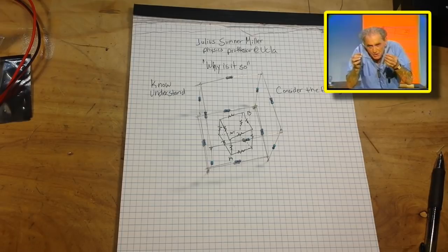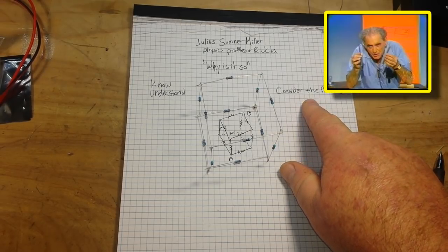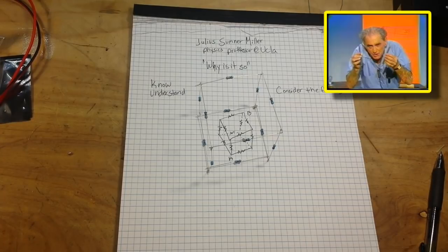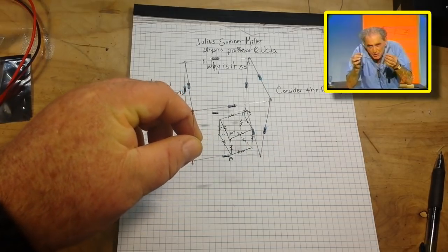And then when he started into his little experiments, he always said 'consider the following.' So as a tribute to Professor Miller, we are going to consider the following: a cube with a resistor on each edge.